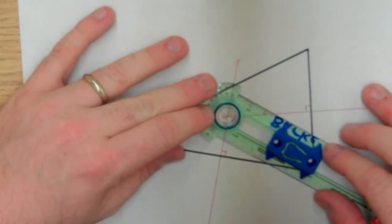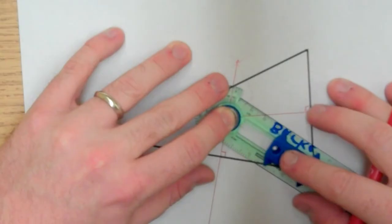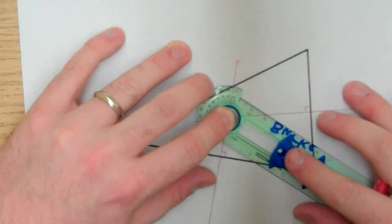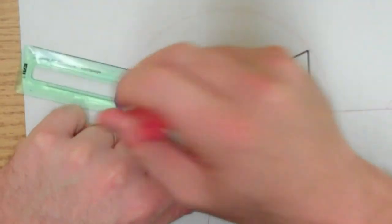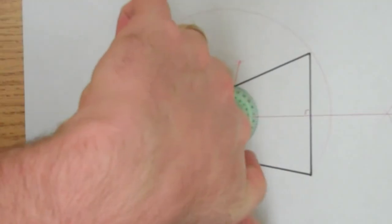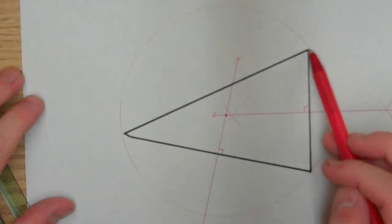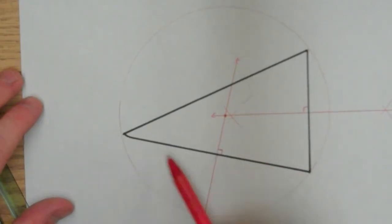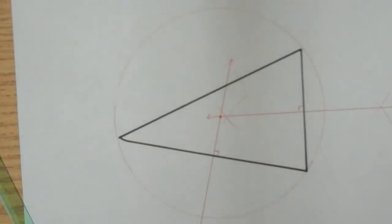I'm going to put the point of my compass right on my circumcenter. I'm going to open it up as far as one of the vertices, and then I'm going to try and draw a circle. And that's not too bad. As you can see, it intersects the triangle right here at the vertices. That's pretty good. And that's how you do a circumcenter.